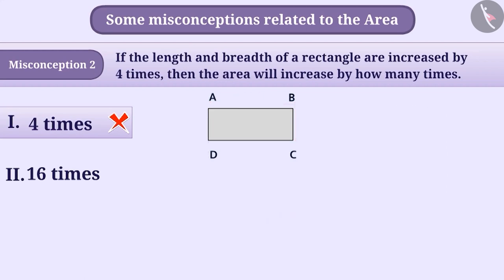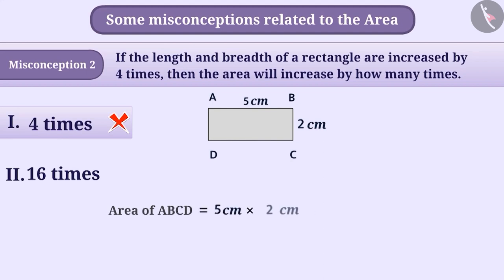Suppose the length of a rectangle is 5 cm and the breadth is 2 cm. The area of this rectangle will be 5 cm × 2 cm = 10 square centimeters.